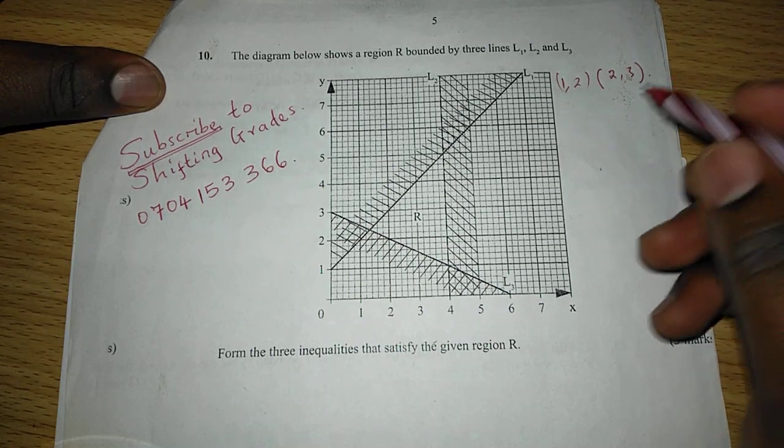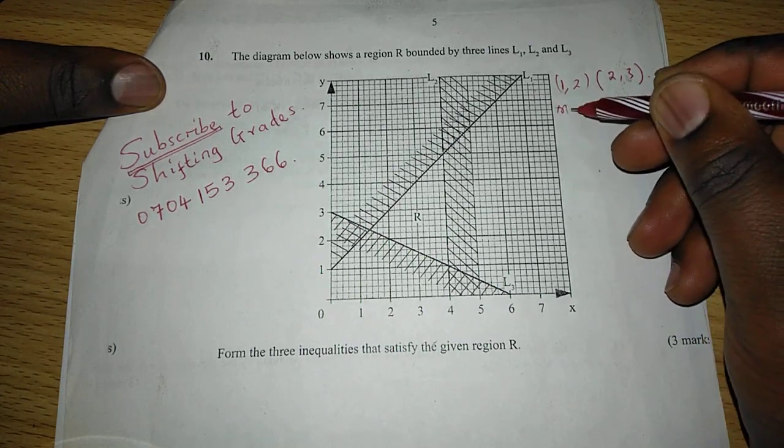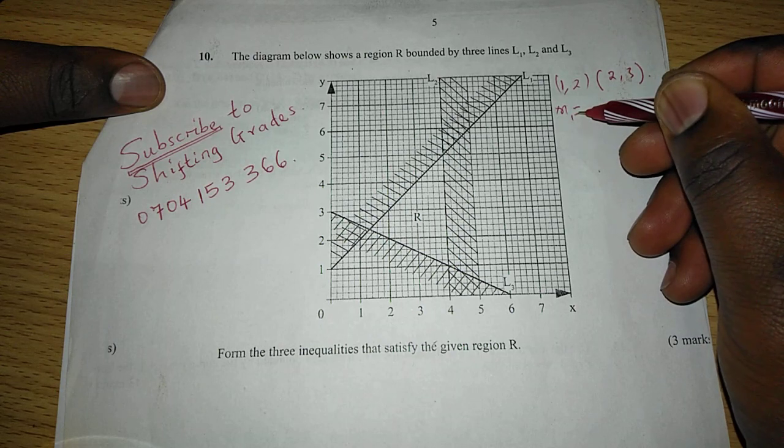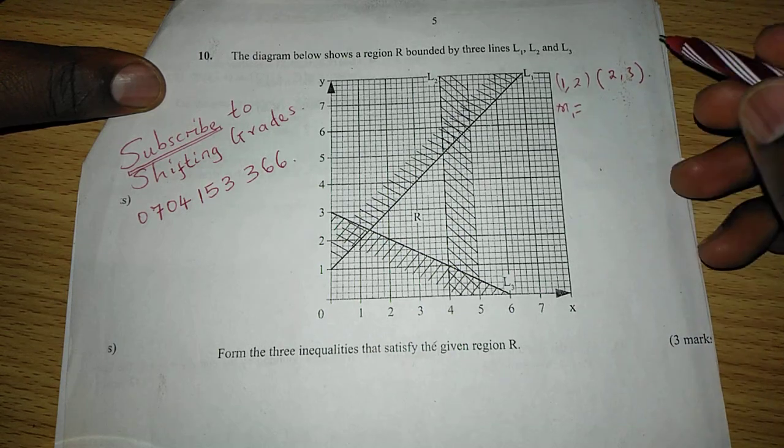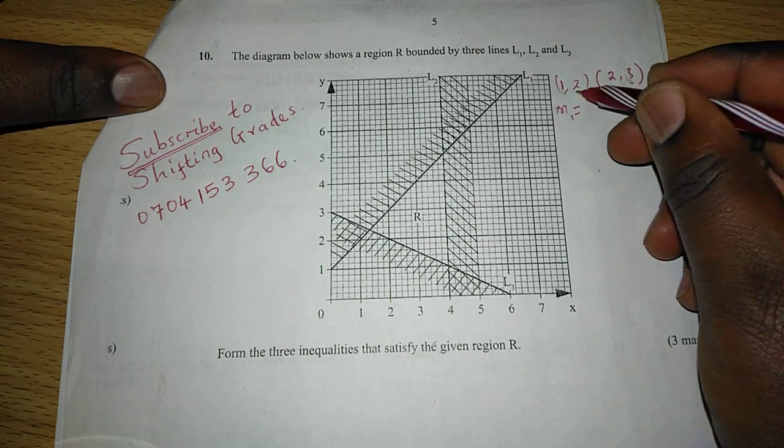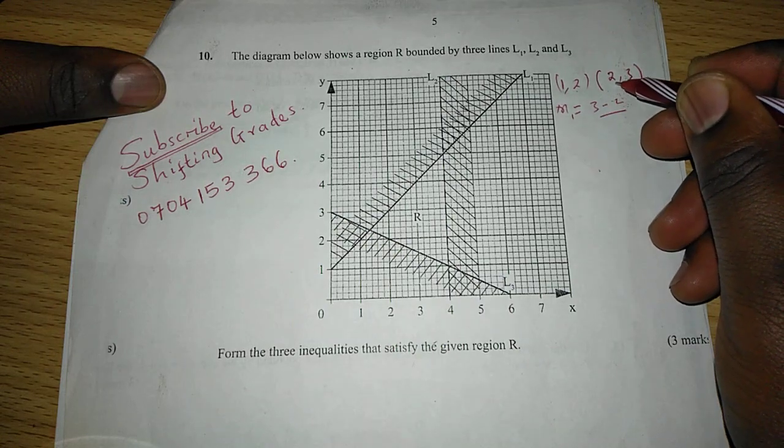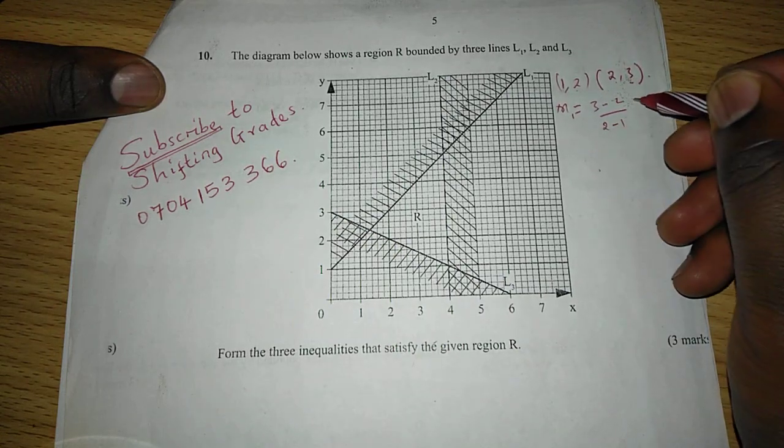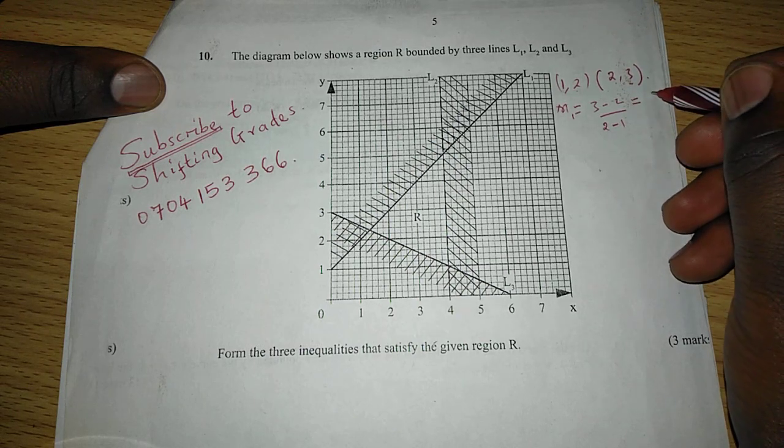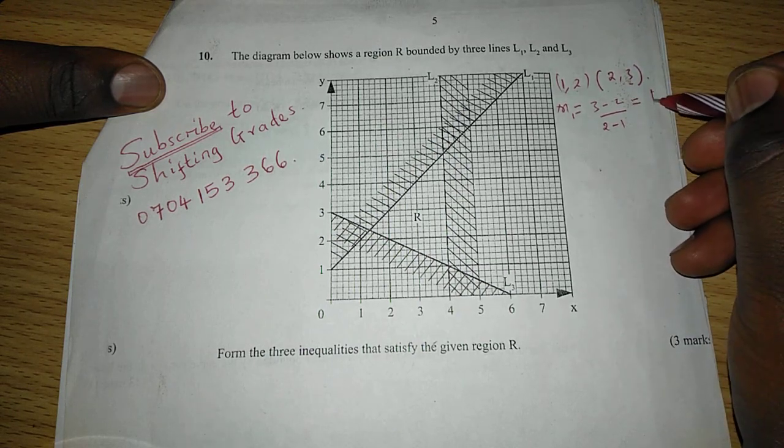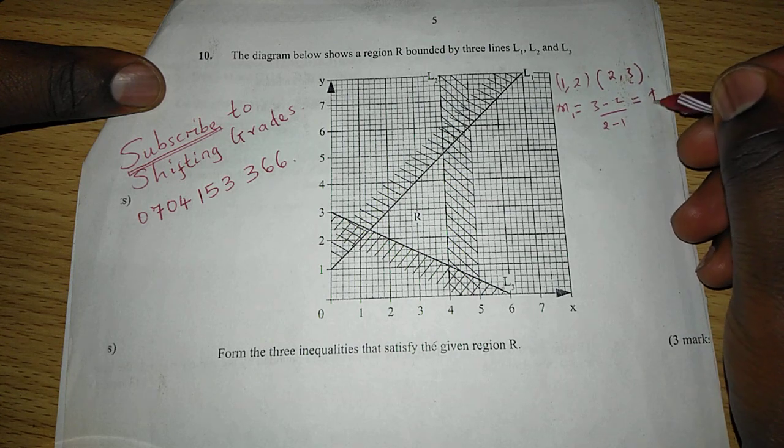So with these two coordinates, we can get gradient for line 1. We can call it M1, which will be change in Y, which is 3 minus 2, divided by change in X, 2 minus 1. This gives us 1 divided by 1, which is just 1. Therefore, the gradient is 1.